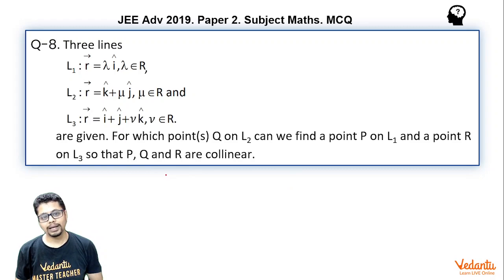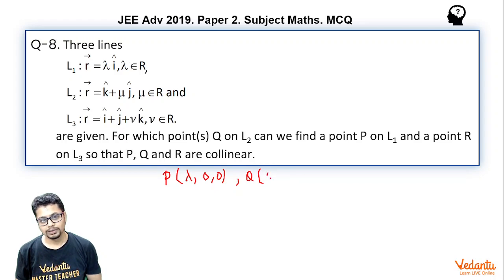So general point on line L1, let's say P, would have coordinates lambda comma 0 comma 0. A general point on line L2, say Q, would have coordinates 0 comma mu comma 1. And a general point on line L3, let's say R, would have coordinates 1 comma 1 comma nu.